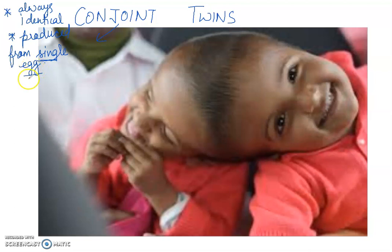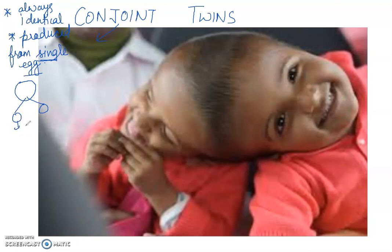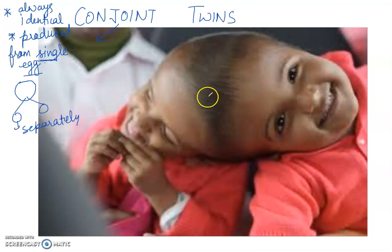This single egg will split into two parts, but the embryos cannot develop separately. So the children born are joined, and the place and extent of the joint can vary considerably. For example, in this picture you can see the head is conjoined.